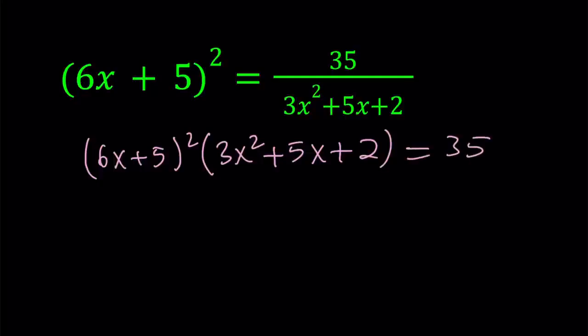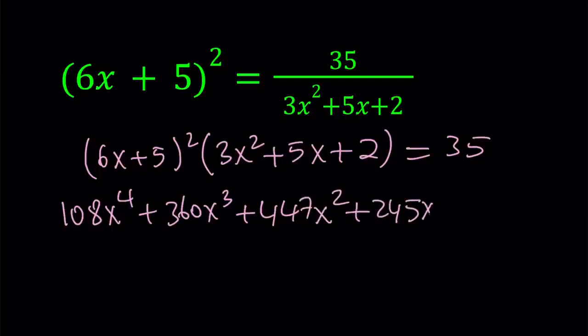Now if you expand all of this and multiply together, obviously you're going to get 36x squared multiplied by 3x squared. That's going to give you 108x to the fourth power to be exact. When you distribute the whole thing, you're going to get the following, which is a quartic equation. And good luck solving that.